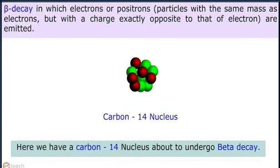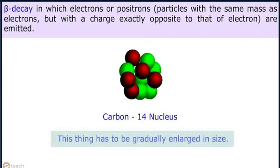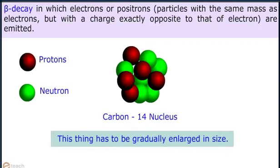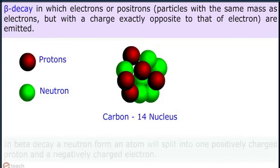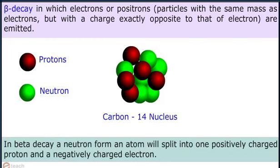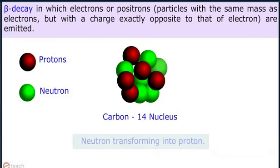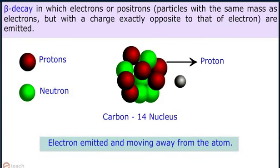Beta decay, in which electrons or positrons — particles with the same mass as electrons but with a charge exactly opposite to that of an electron — are emitted. Here we have a carbon-14 nucleus about to undergo beta decay. In beta decay, a neutron from an atom will split into one positively charged proton and a negatively charged electron.